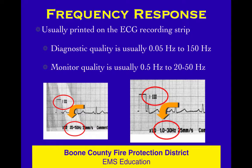You may have a monitor that has diagnostic quality capability on your limb leads. How would you know? You would look at the bottom of the strip and see the frequency response printed there. Diagnostic quality is going to have a decimal point and a zero — it's going to be .0-something — whereas monitoring quality is not going to have a zero; it's going to be .5 or something like that. You can see very clearly in those examples where it's printed for you.